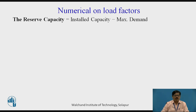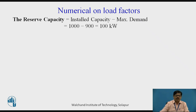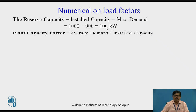Now let us see how to find out the reserve capacity. The reserve capacity equals installed capacity minus maximum demand. The installed capacity of the power plant was 1000 KW, whereas the maximum demand was 900 KW. So the reserve capacity is obtained as 100 KW.